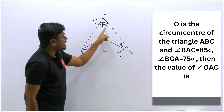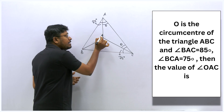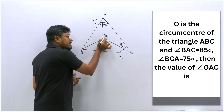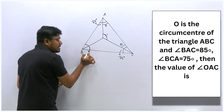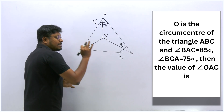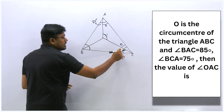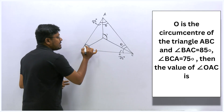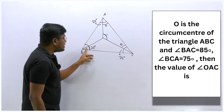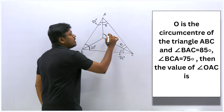To find the circumcenter angle AOC, we need the angle opposite to it, which is angle B. Using the angle sum property: angle B = 180° − 85° − 75° = 20°. The circumcenter angle AOC = 2 × 20° = 40°.